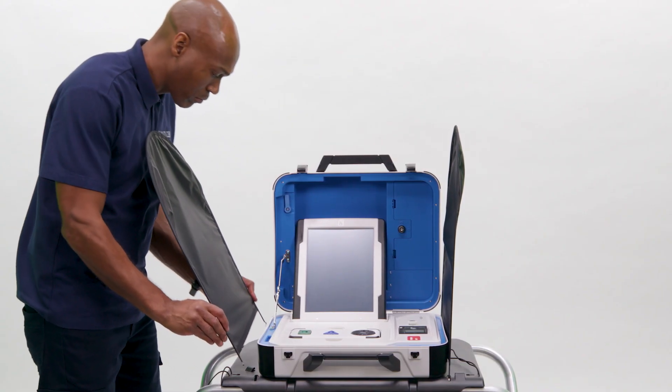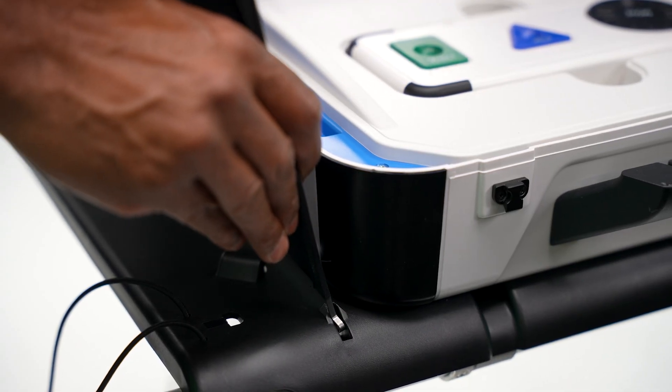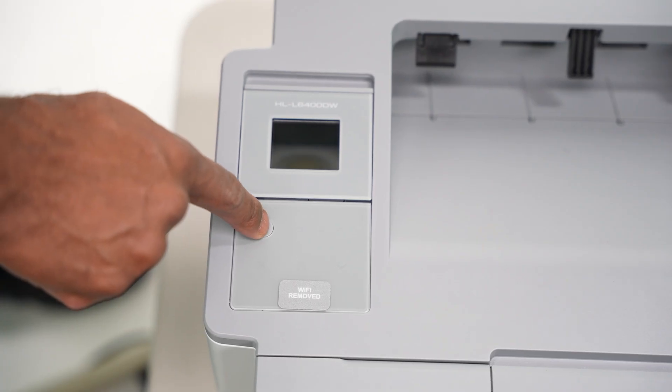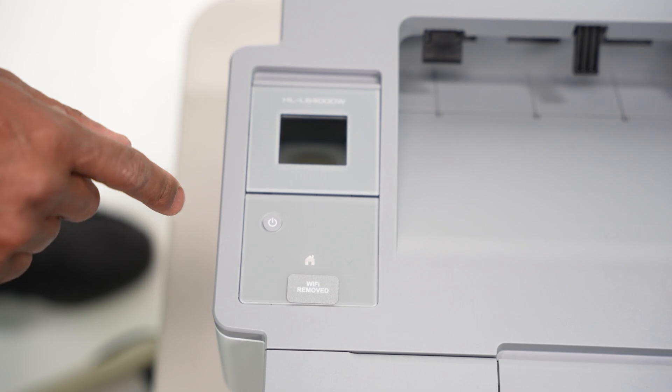Attach the privacy screens to the sides of the touch writer. Press the switch below the screen on the top left side of the ballot printer. Power it on.